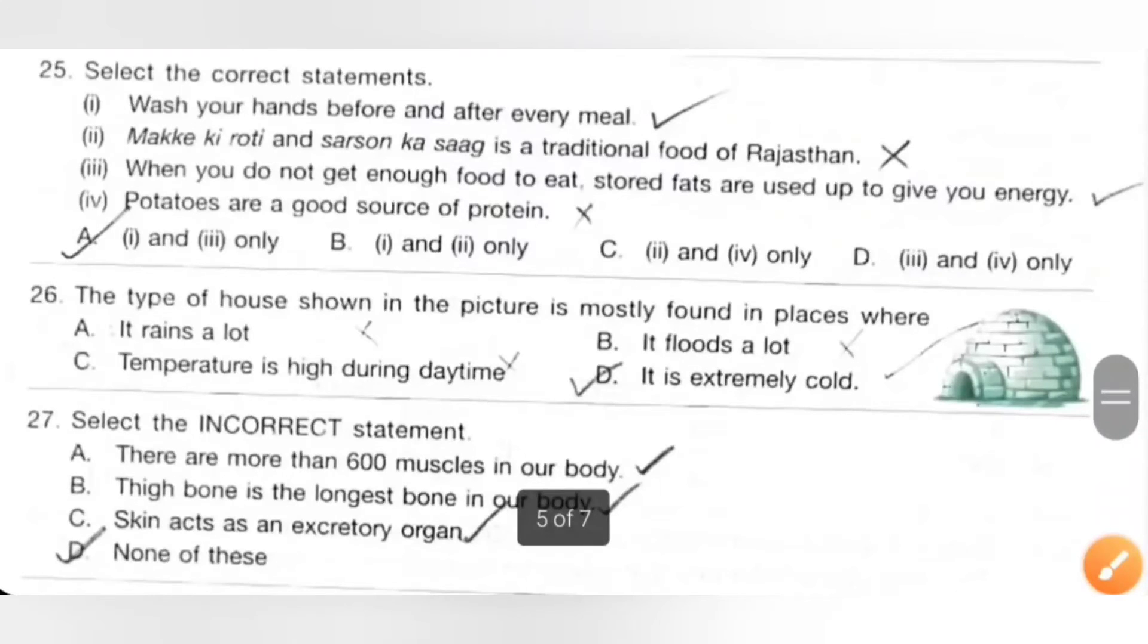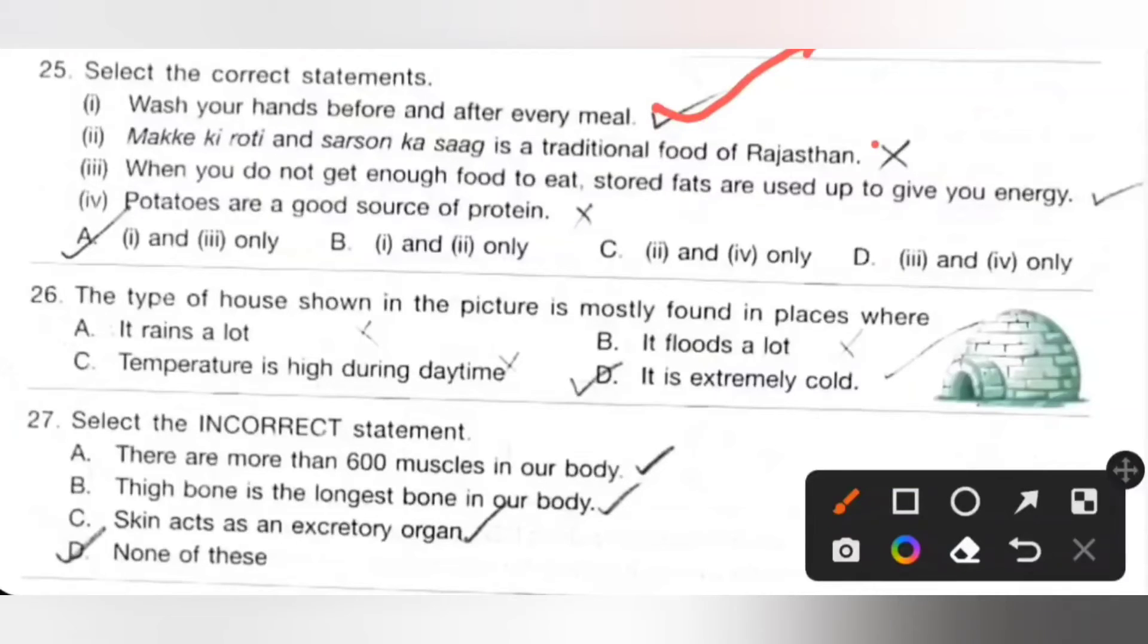Twenty-fifth: Select the correct statement. 1: Wash your hands before and after every meal, it is the correct statement. 2: Makki ki roti and sarson ka saag is a traditional food of Rajasthan, it is incorrect because it is a traditional food of Punjab. 3: When you do not get enough food to eat, stored fats are used up to give energy, it is the correct statement. 4: Potatoes are a good source of protein, it is incorrect because potatoes are a good source of carbohydrate. So only 1 and 3 statements are true. Option A.